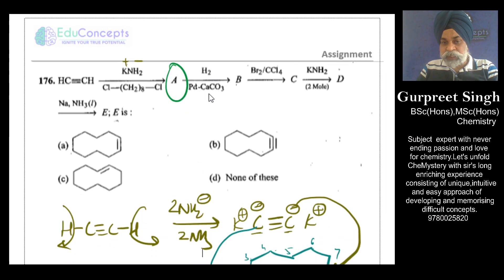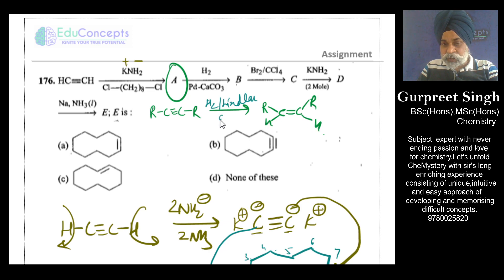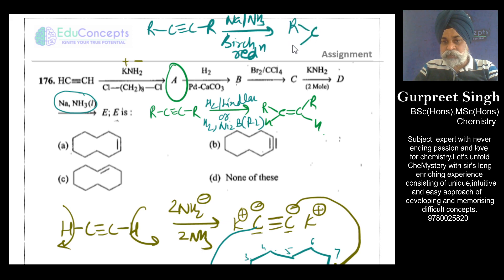Compound A is then treated with hydrogen. Remember: hydrogen in the presence of Lindlar's catalyst converts a triple bond into a cis alkene. Alternatively, hydrogen in the presence of nickel boride (P-2 catalyst) also gives cis alkene. The third method — sodium in liquid ammonia — is called Birch reduction, which converts a triple bond into a trans alkene. These are the three ways of doing partial reduction to convert a triple bond into a double bond.